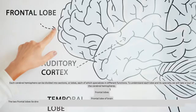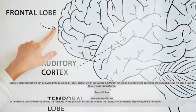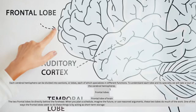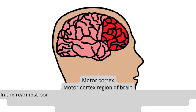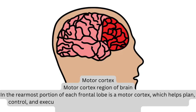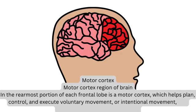Frontal Lobes. The two frontal lobes lie directly behind the forehead. When you plan a schedule, imagine the future, or use reasoned arguments, these two lobes do much of the work. One of the ways the frontal lobes seem to do these things is by acting as short-term storage sites, allowing one idea to be kept in mind while other ideas are considered. In the rearmost portion of each frontal lobe is a motor cortex, which helps plan, control, and execute voluntary movement — or intentional movement — like moving your arm or kicking a ball.